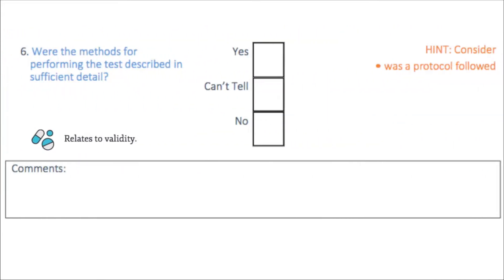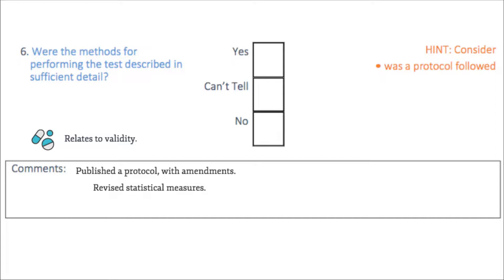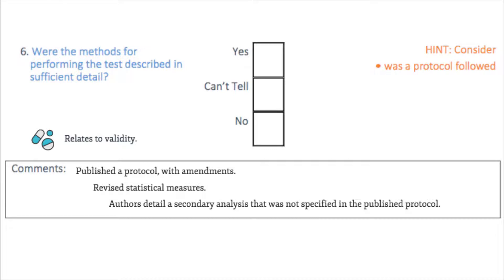Have the authors been transparent in their approach and provided a protocol to their study? We can see that Hollis et al. published a protocol, with amendments made after it became clear that around 30% of their sample had not received a diagnostic decision within the six-month study period. Their revisions factored in a revised statistical power calculation and an increased participant sample size to provide more reliability in the results. The authors have detailed their methods and published their revisions, clearly describing the methods for performing the QB test. However, the authors do detail a secondary analysis not specified in the published protocol, conducted on the primary outcome stratified by type of QB test administered — which could be a concern for bias, though the authors detail the reasons for this in Appendix 4.